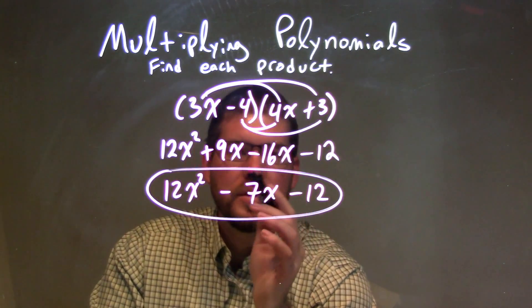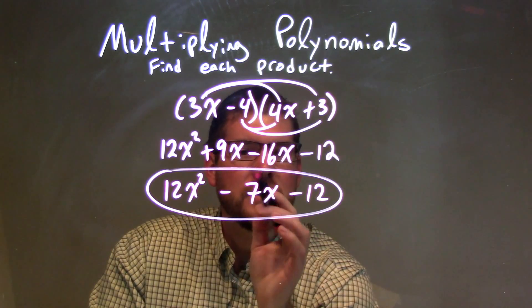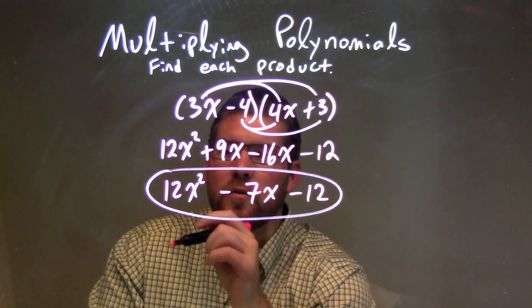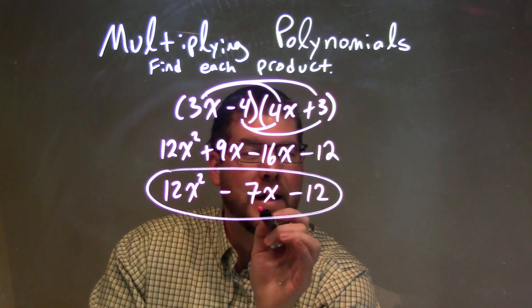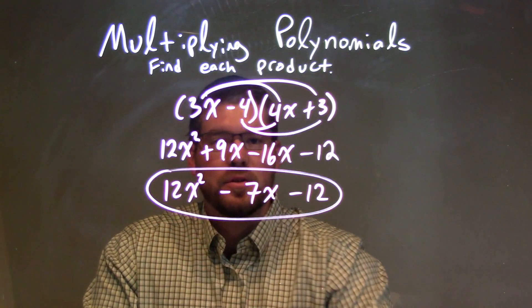Combine our like terms, only two like terms, with the 9x minus 16x, which came out to be minus 17x. And so our final answer is 12x squared minus 17x minus 12.